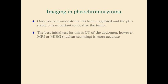Once the patient is under control, you'll want to image to localize the tumor and determine if they're a surgical candidate. CT is the go-to initial imaging test. Stabilize the patient first — don't do imaging until blood pressure is controlled. CT of the abdomen is the best initial imaging test, though MRI is more sensitive and specific. MIBG nuclear iodine scanning is also available.